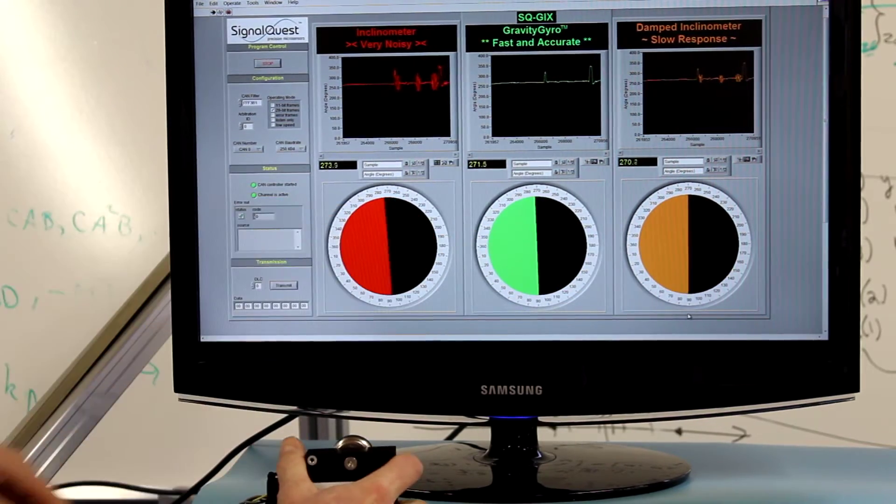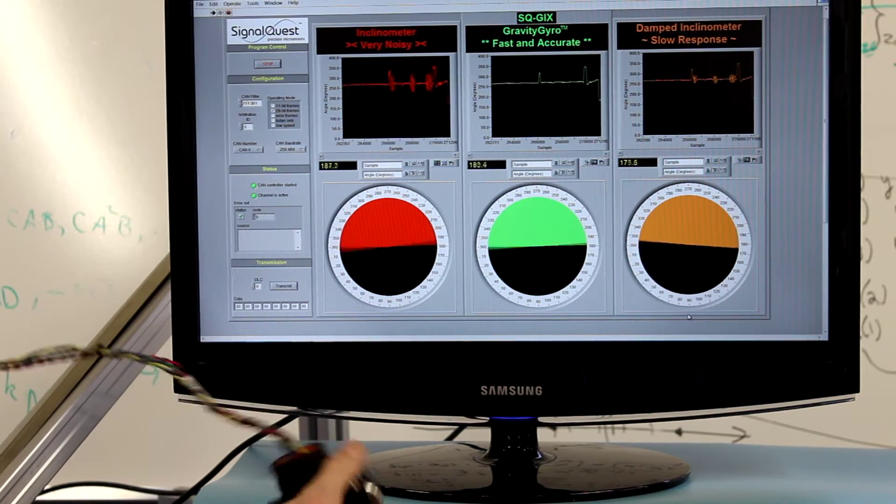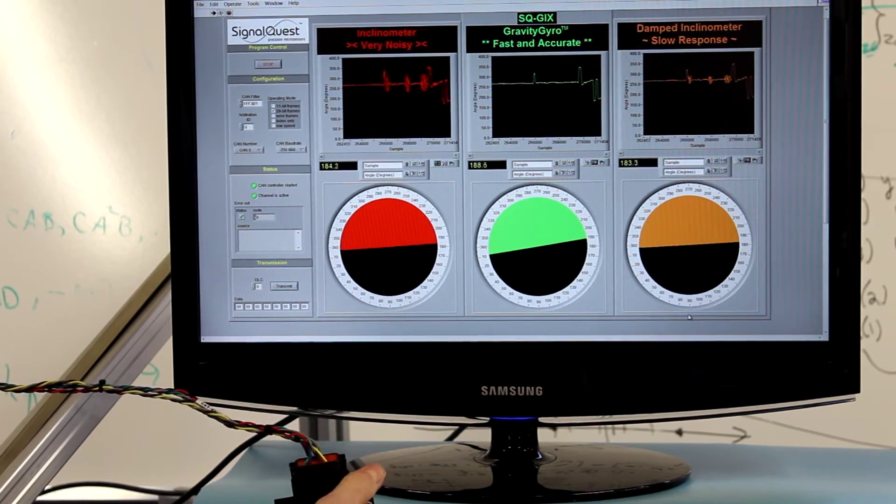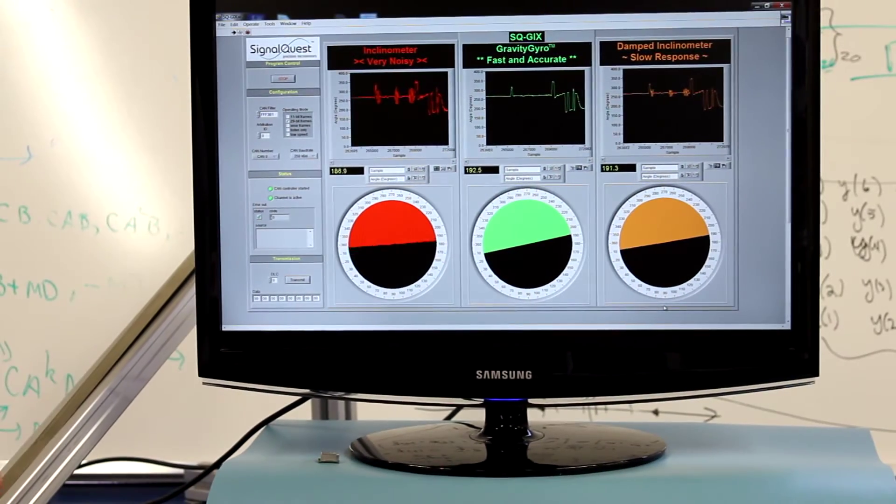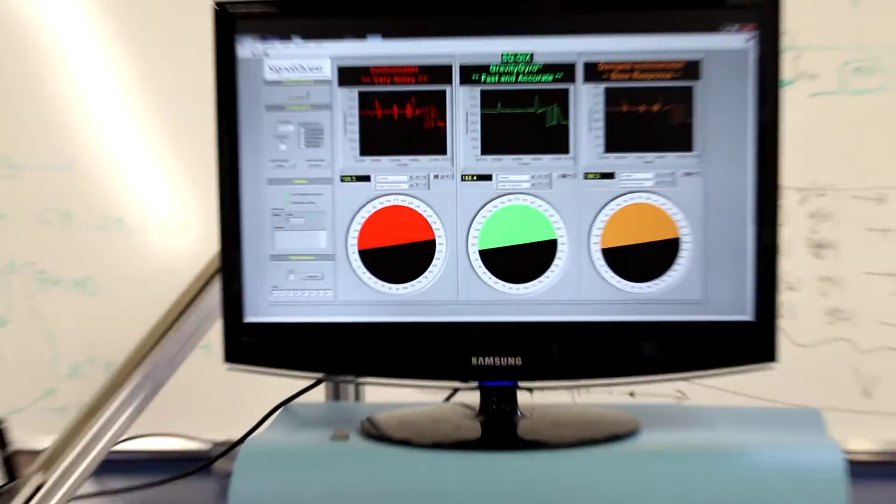The one in the center is the Gravity Gyro. It's both fast and accurate. I'm going to mount this on a test track that exposes the sensor to extremely high linear acceleration, shock, and vibration.